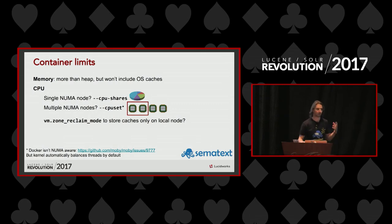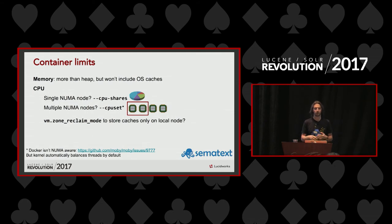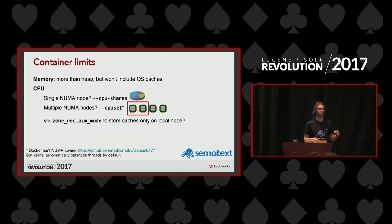With Java 9 it will be smarter — it will figure out it's running in a container and has that many CPUs. Speaking of container limits on memory: OS caches are managed separately. If you have a heap of 30 gigs, you normally allocate something like 40 gigs as a container limit to give headroom for other stuff, but you don't need to include OS caches in that container limit because they're not accounted for there.